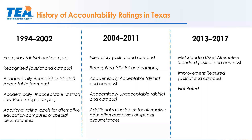Then we redesigned our assessment — we went from TOSS to TAAS — and in 2004, we had rating labels based primarily on the TAAS test. We assigned campus and district performance labels of exemplary, recognized, academically acceptable, and academically unacceptable. We had additional ratings for alternative education campuses or special circumstances, such as hurricane issues.